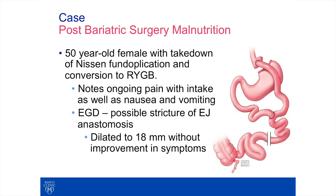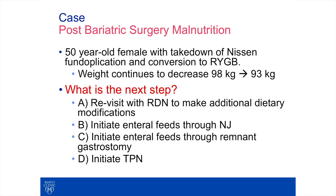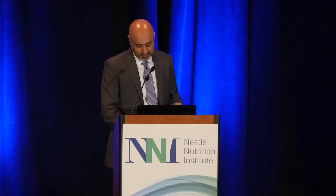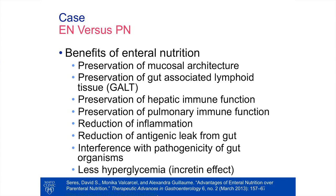Now she was also having nausea and vomiting. EGD was done and they thought maybe there was a stenosis—let's dilate and see if that helps, but it didn't. Her weight kept going down. We had to decide: the weight's going down, she's not able to meet her nutritional needs, she's miserable. Do we try dietary modifications? Do we try enteral feeds—and if so, through a nasal jejunal tube into the remnant stomach? Or do we say enteral won't work and go to TPN? We relied on the multitude of studies, especially in critical care, showing that if the gut works, it's best to use it—here's a list of all the benefits from enteral feeds compared to parenteral nutrition.